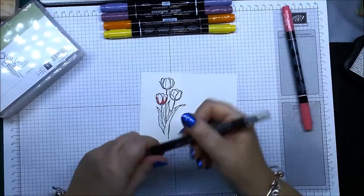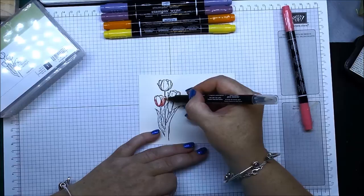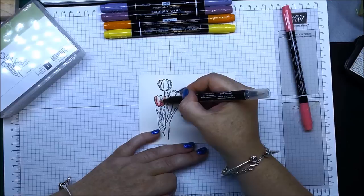Pop it away and then just get a blender pen and then just drag the color wherever you want it.